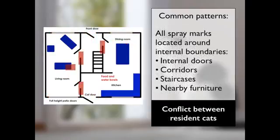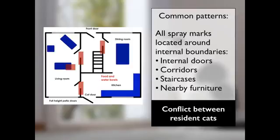Another common pattern is to see all the spray marks located around internal boundaries — internal doors, corridors, around the bottom and top of staircases, and on furniture near those entry and exit points between rooms. This tends to indicate that conflict is going on between resident cats. The resident cats are trying to time-share space within the central territory, which is an indication that there isn't social cohesion within the group and they are treating each other as if they were unfamiliar.